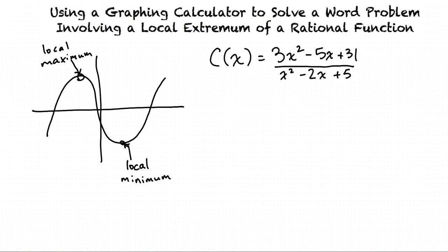c of x is the concentration in grams per milliliter of a certain chemical x minutes after a reaction. Our goal for the problem is to use the Alex graphing calculator to find the value of x that maximizes the concentration, and then give the maximum concentration.